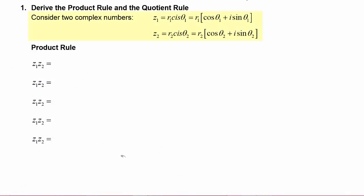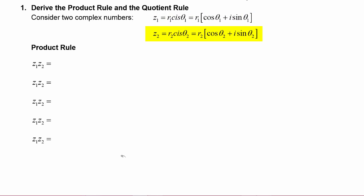To start off with, let's consider two complex numbers z1 and z2, where z1 is equal to r1 cis θ1, which we know is shorthand for r1 times the quantity cosine θ1 plus i sine θ1. And z2 is r2 cis θ2, which is shorthand for r2 times the quantity cosine θ2 plus i sine θ2.